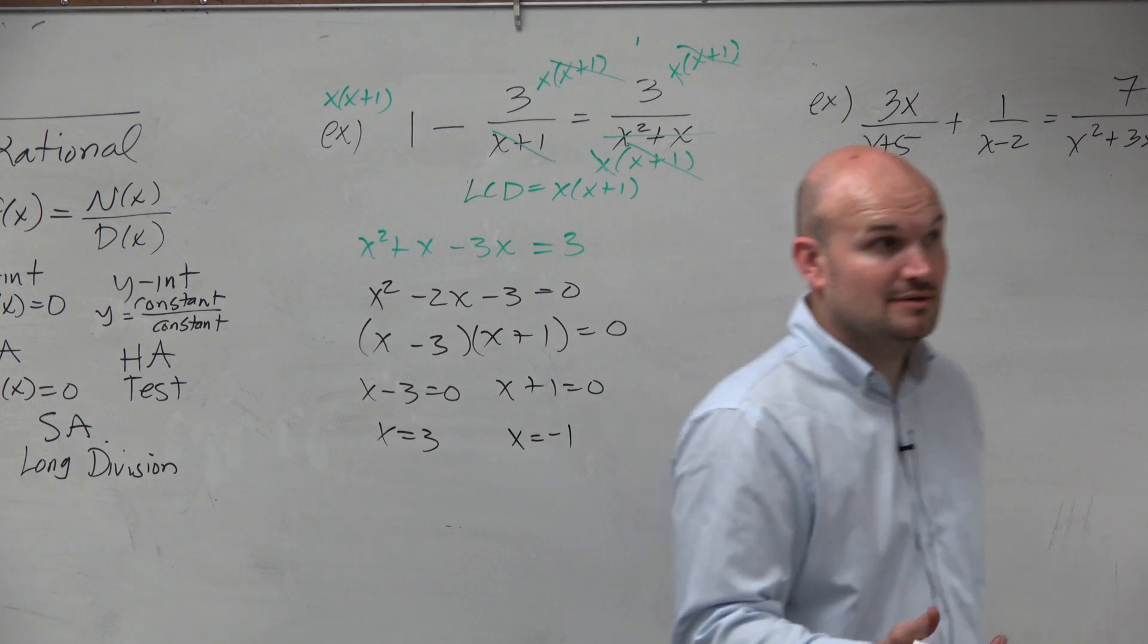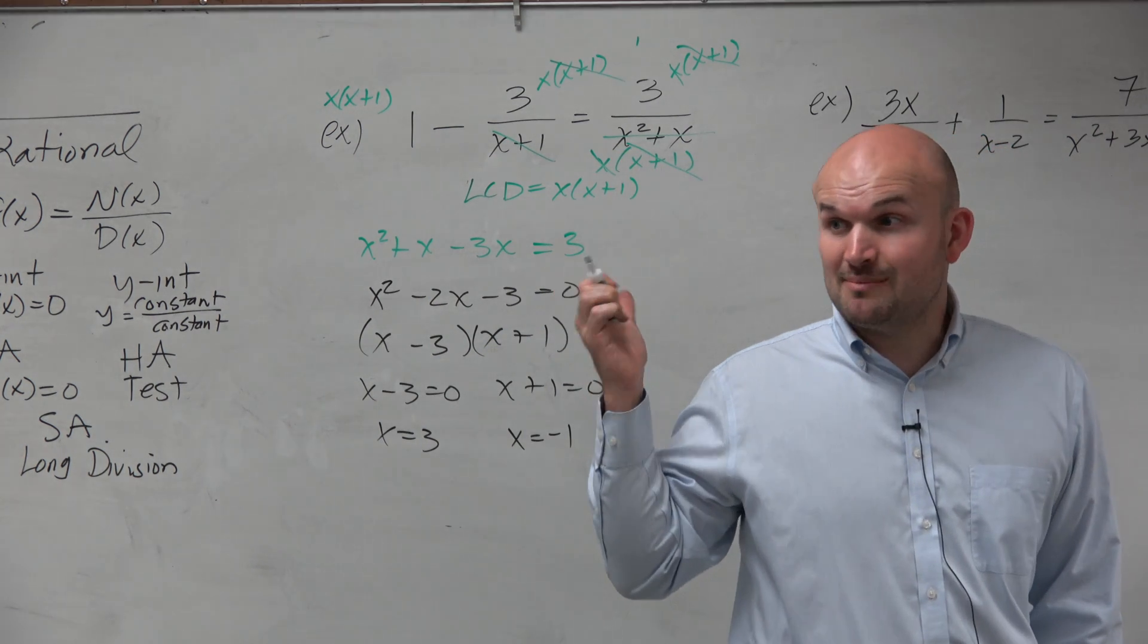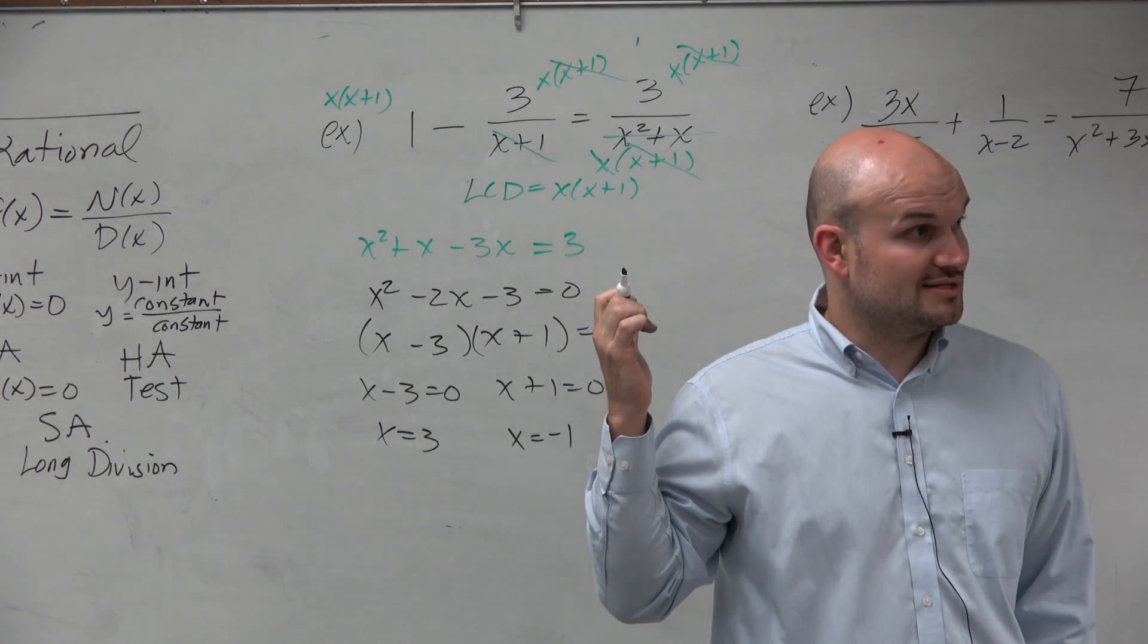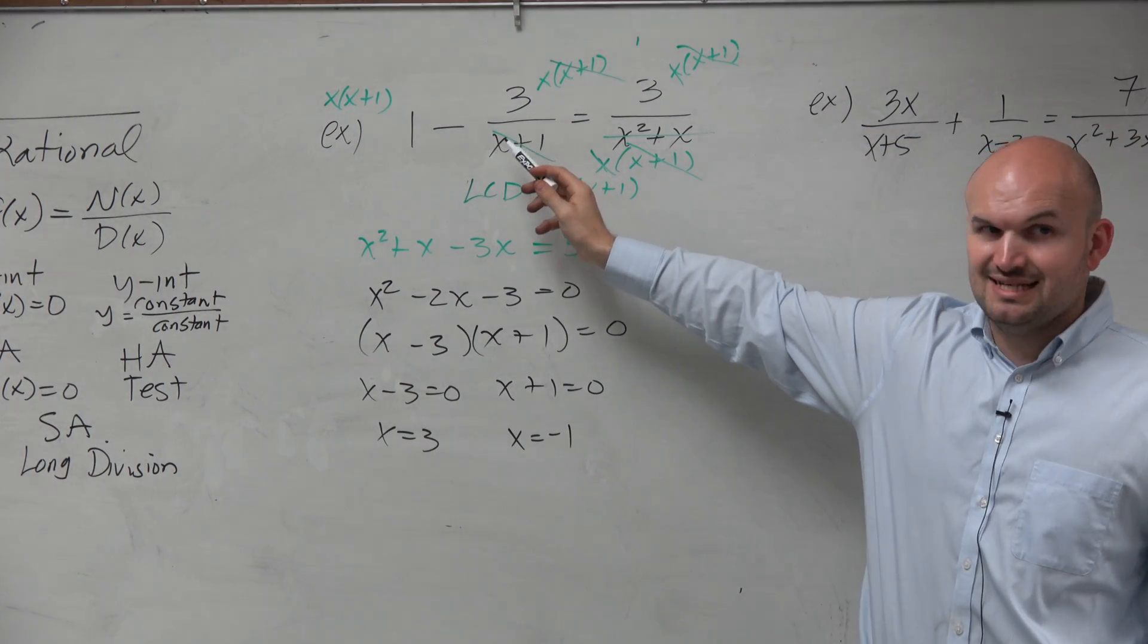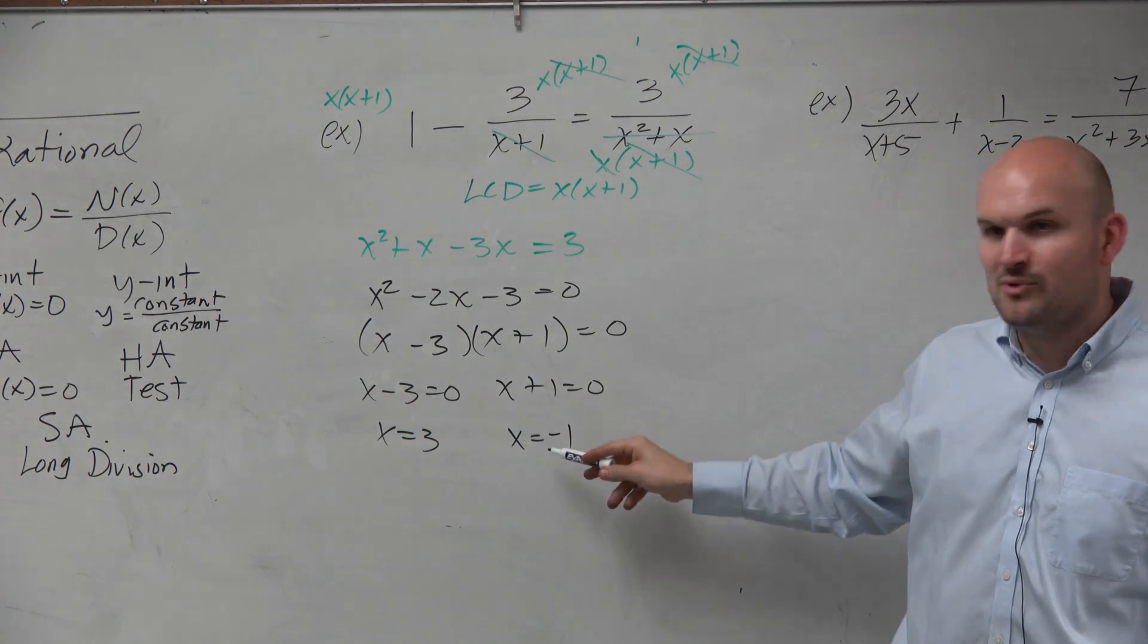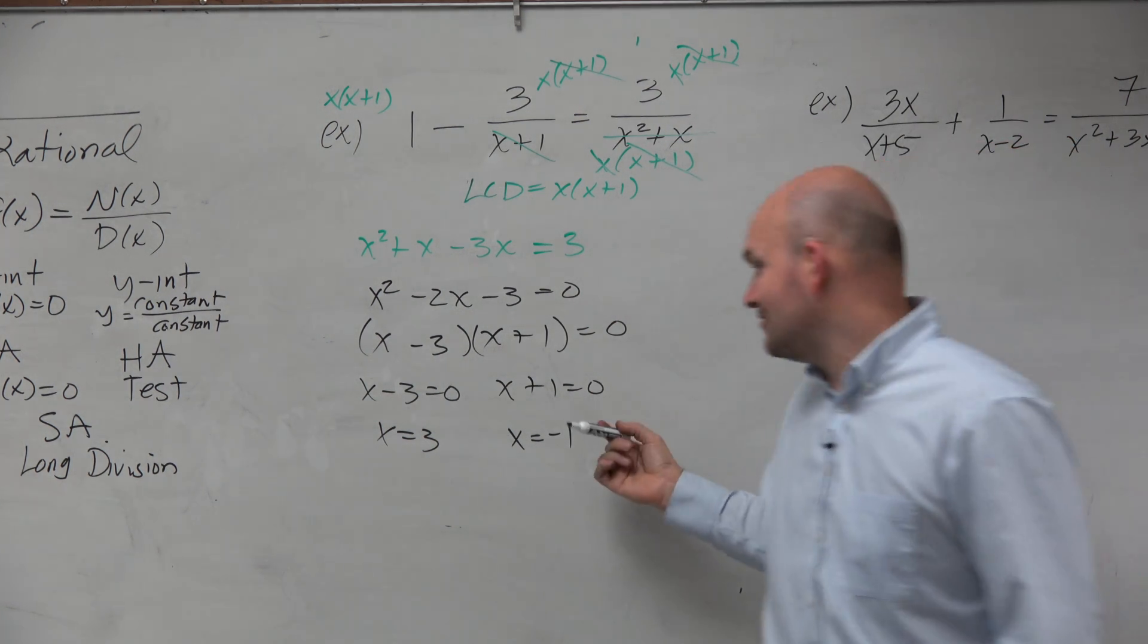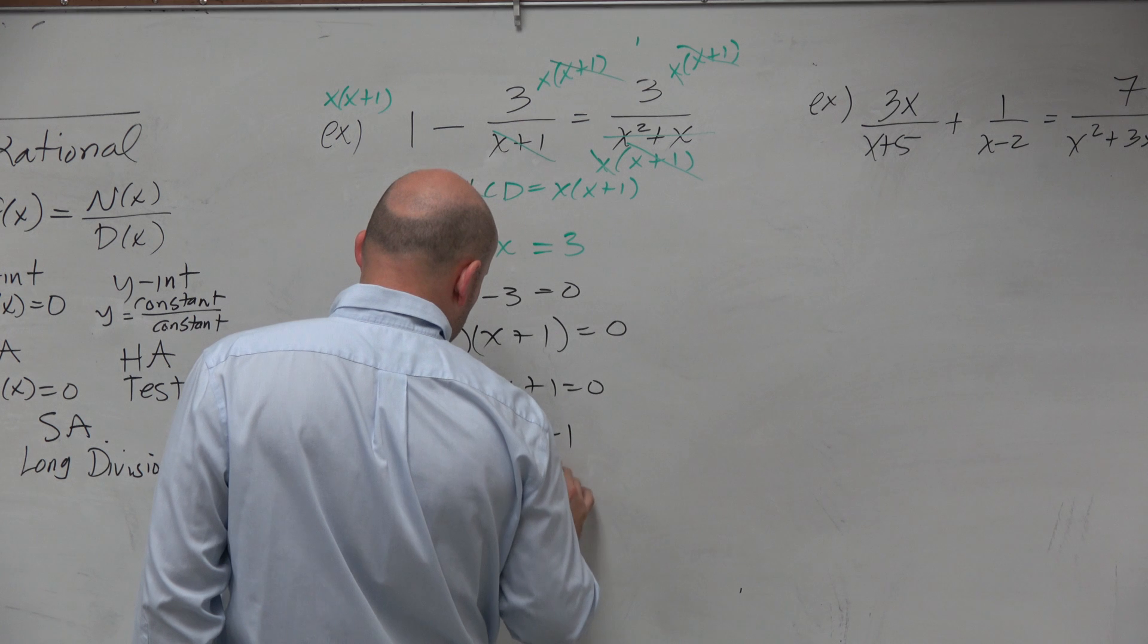Should I walk away? No, no, no. I've got to make sure I go back and check my answer, right? Make sure it's not extraneous. So I go back up to my room and say, oh, I have a restriction here. x cannot equal negative 1. And crap, what did I just find? x equals negative 1. So this is going to be called extraneous.